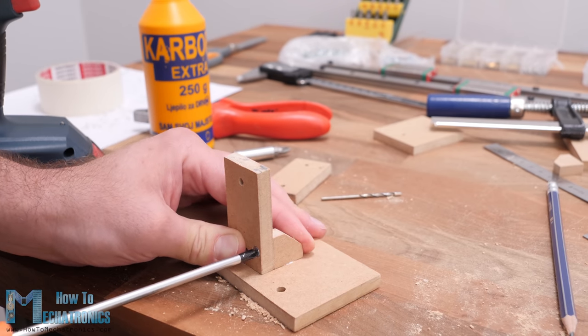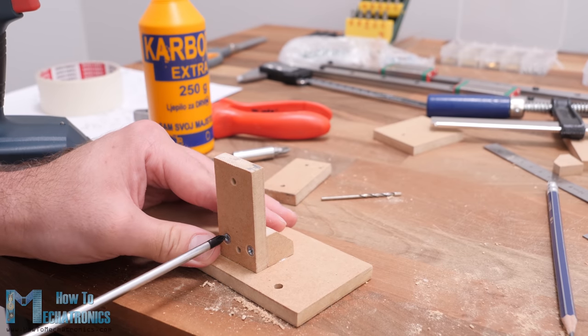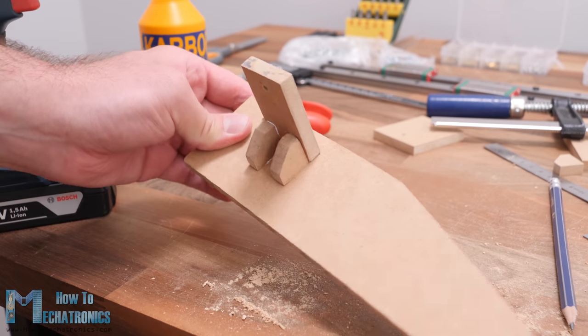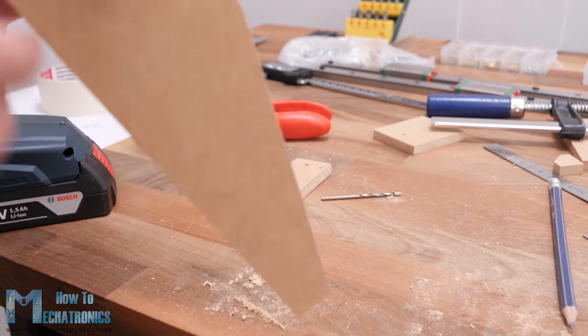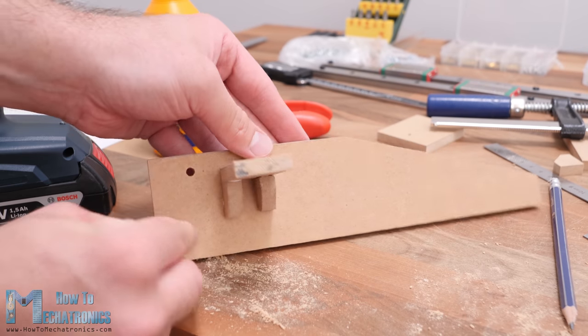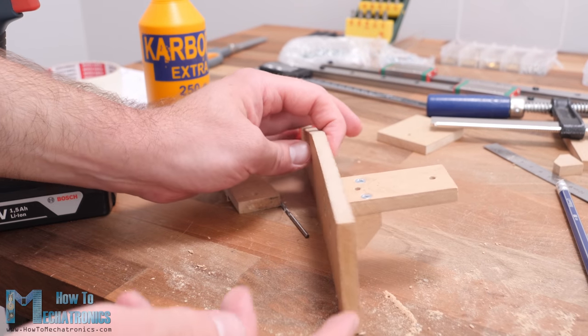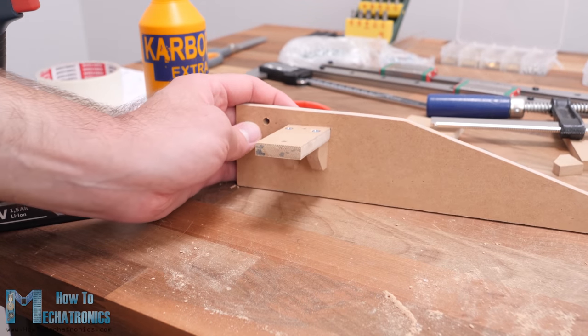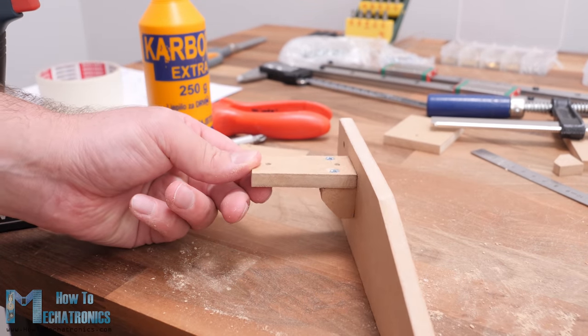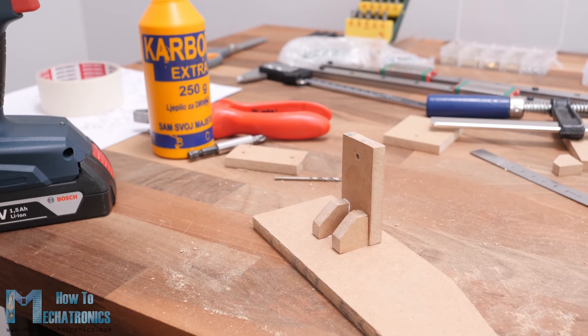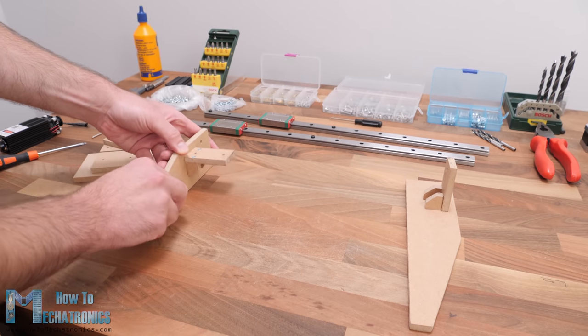To be honest, this method of assembling these MDF parts is not that good, as it's hard to get them square. Everything we do is by hand and the MDF boards are just 8 mm thick, which additionally complicates the process. Maybe a better and easier way would be to use metal brackets, which can be easily found in a hardware store.